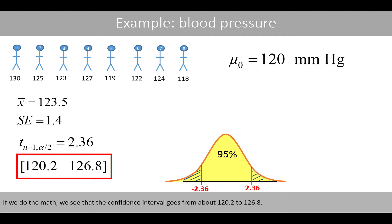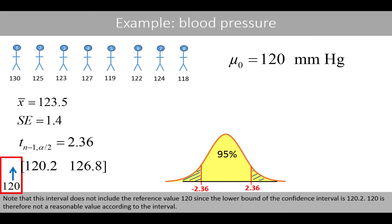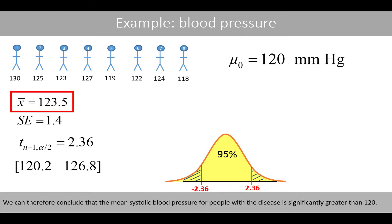If we do the math, the confidence interval goes from about 120.2 to 126.8. Note that this interval does not include the reference value of 120, since the lower bound is 120.2. Therefore, 120 is not a reasonable value according to the interval, and we conclude that the mean systolic blood pressure for people with the disease is significantly greater than 120.